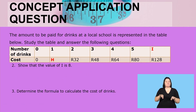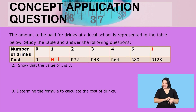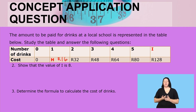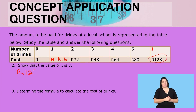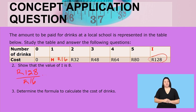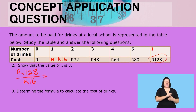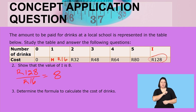Show that the value of I is 8. To show this, we take the cost given under I, which is 128 rent, and divide it by the cost for one drink, which is 16 rent. 128 divided by 16 gives us 8. We have shown that the value of I is 8.